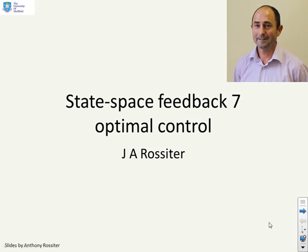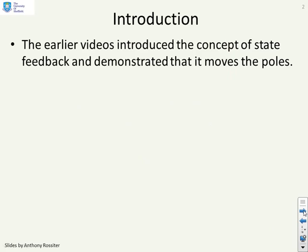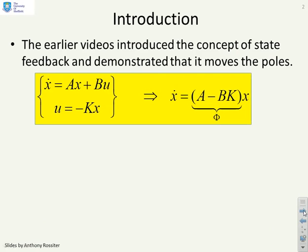This is the seventh video in this chapter, looking at optimal control. Earlier videos introduced the concept of state feedback and demonstrated that it moves the poles. If you have a state space system x dot equals Ax plus Bu and you introduce feedback u equals minus Kx, then you get a new transition matrix A minus BK which has different pole positions.